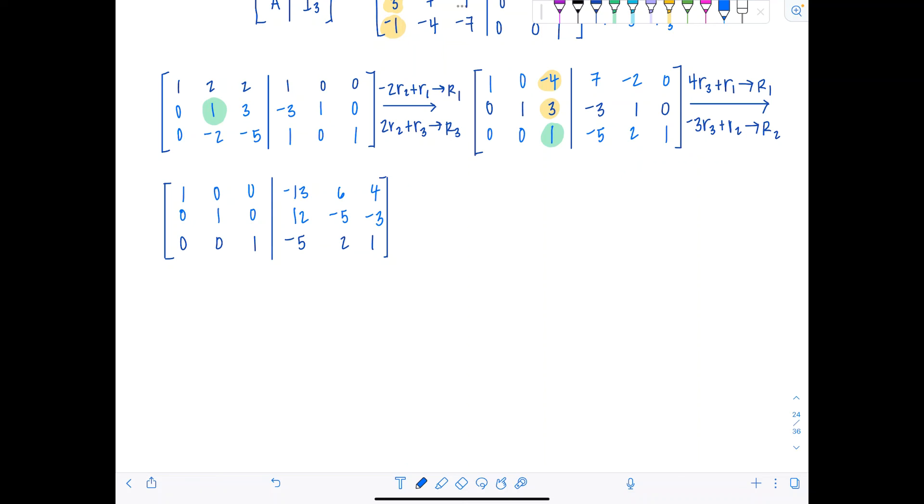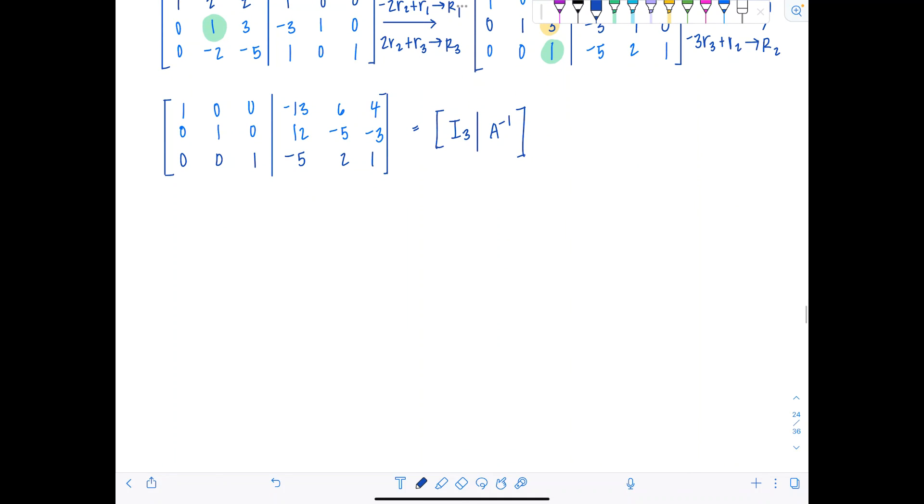If you made a mistake, go back, see what caused you to make that mistake. Did you forget a negative? Did you add something incorrectly? It's fine. Use that as a learning opportunity for yourself. So now at long last, we have identity matrix order three on the left and A inverse is on the right. So let's rewrite A inverse nicely. A inverse is: negative 13, six, four, 12, negative five, negative three, negative five, two, one.